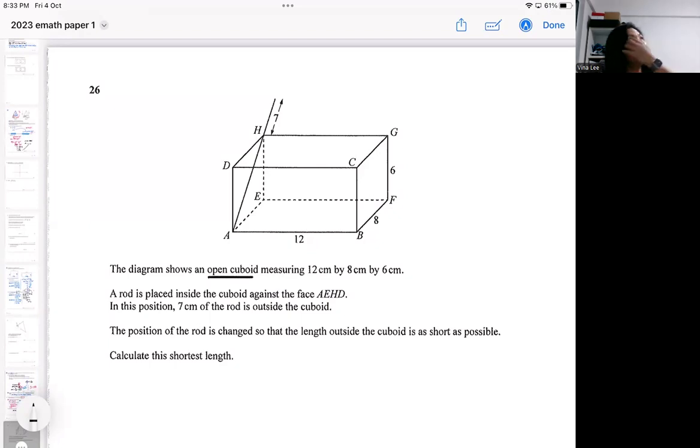An open cuboid is like the top is open. And then there is a rod that is placed inside the cuboid against the face. So this is the rod, and when the rod is placed in this direction, 7 cm is out of the box. So when it is being placed in this position, 7 cm of the rod is sticking out of the box.